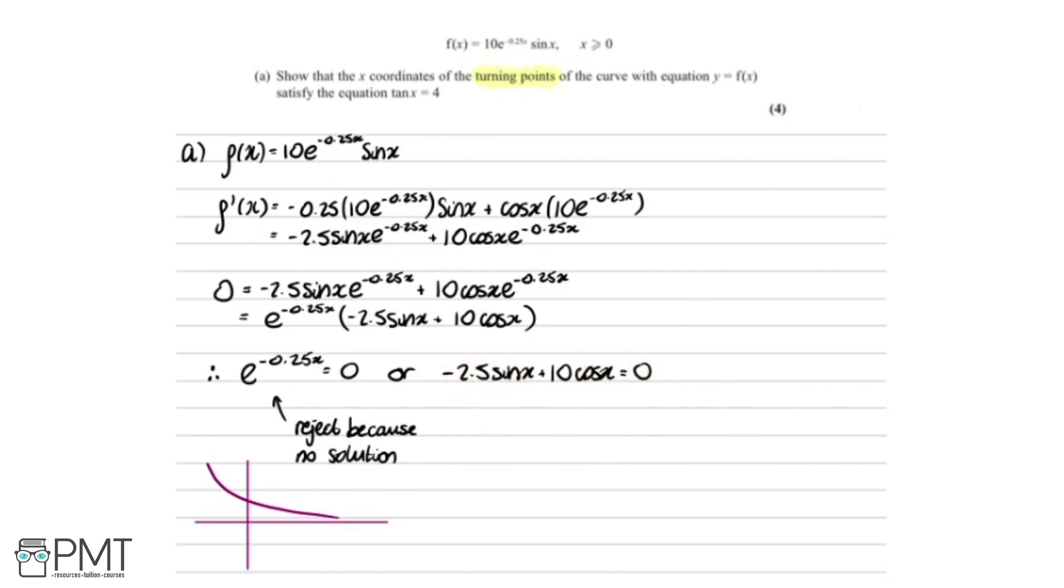So first, I'm just going to add the minus 2.5 sin x onto the other side. So we get 10 cos x equals 2.5 sin x.